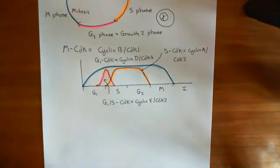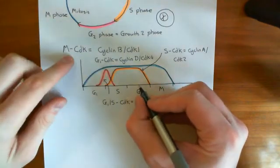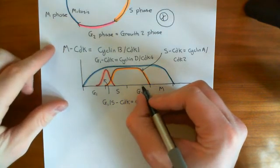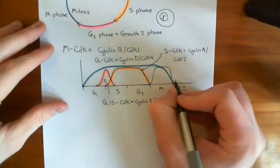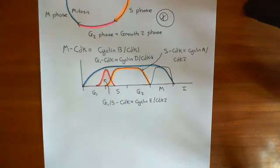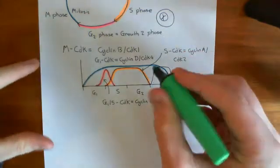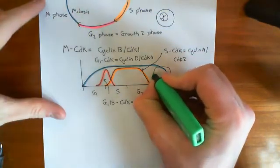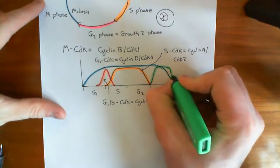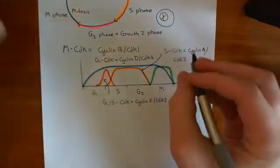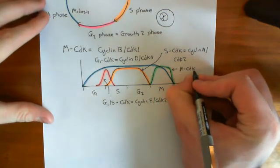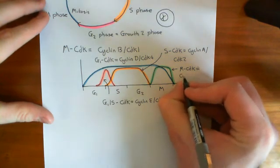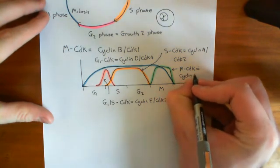Finally, the M CDK — cyclin-B CDK1 — spikes when you go into M phase and then comes back down as you leave M phase. It is the archetypal cyclin-dependent kinase of M phase. So this is our M CDK, also called cyclin-B CDK1.